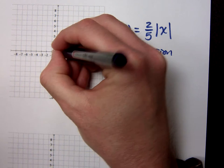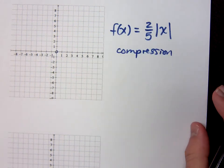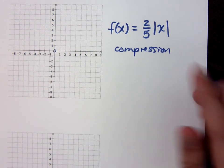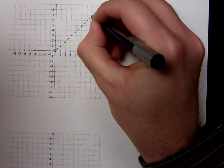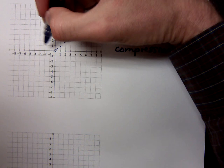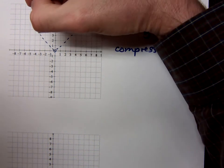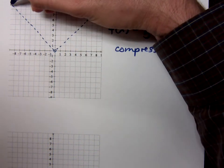So, here is your original absolute value function would do this. So, this guy has a slope of one.